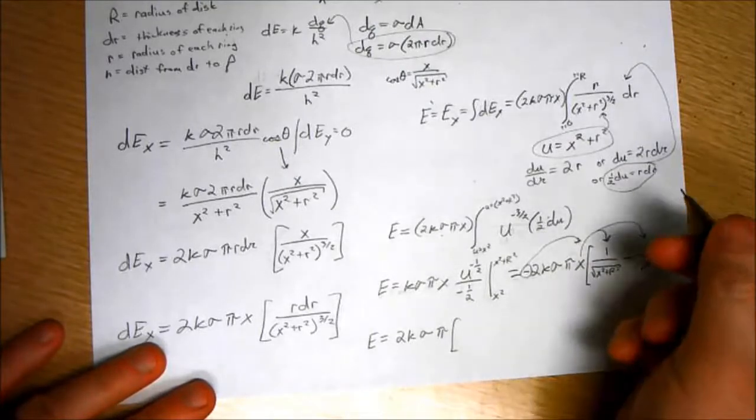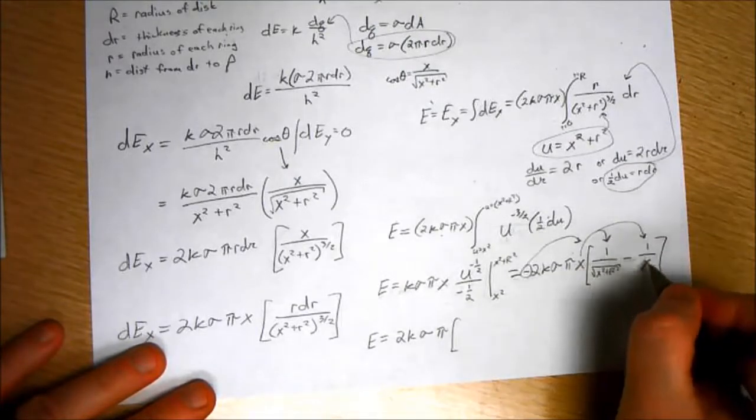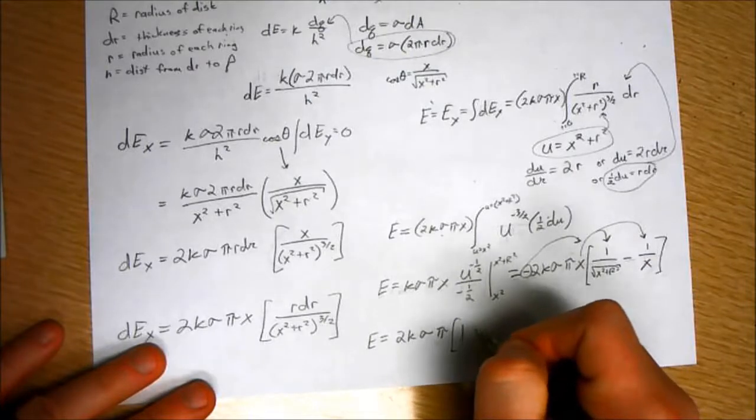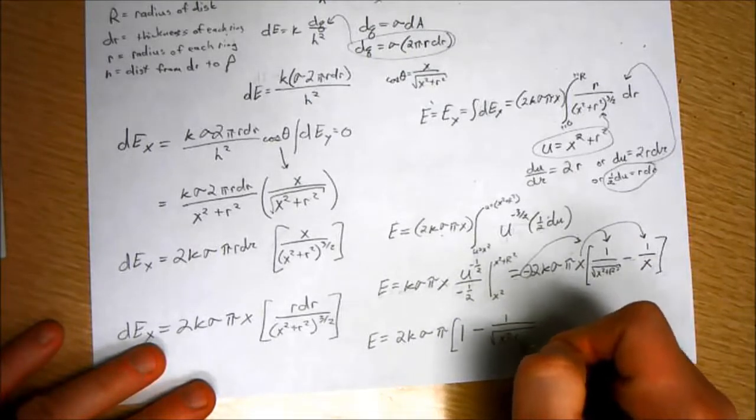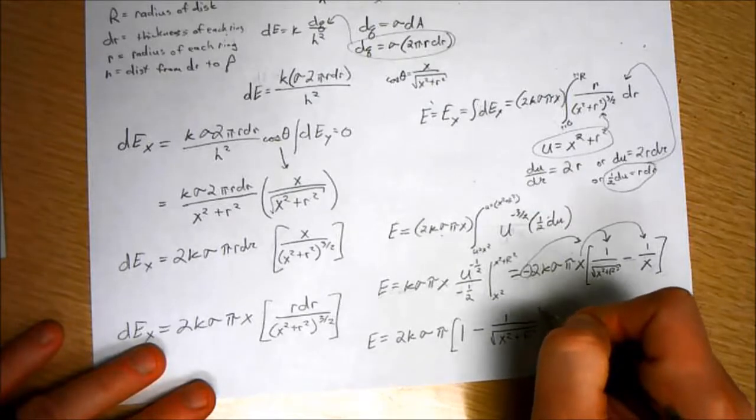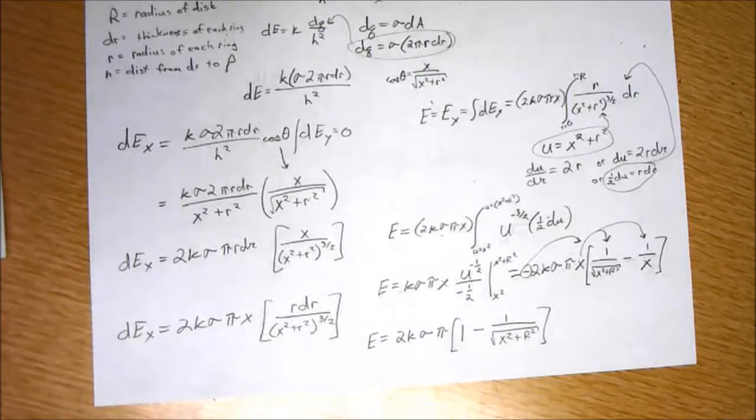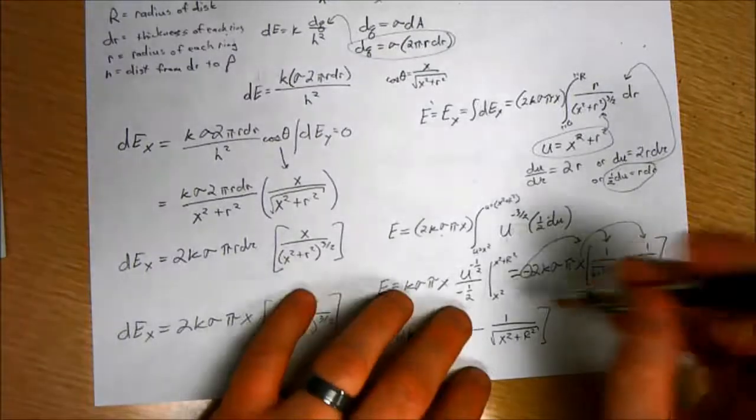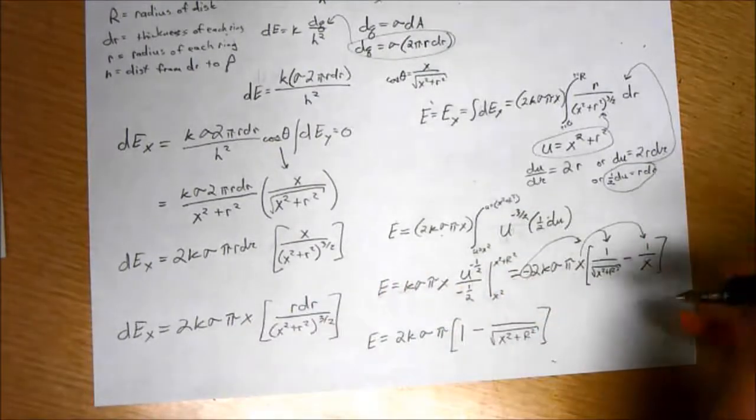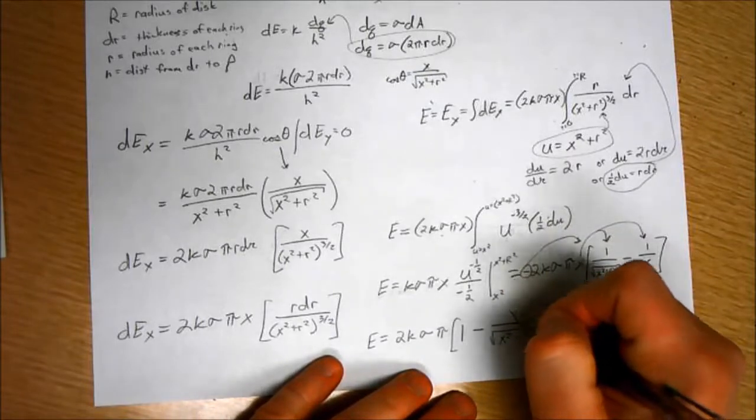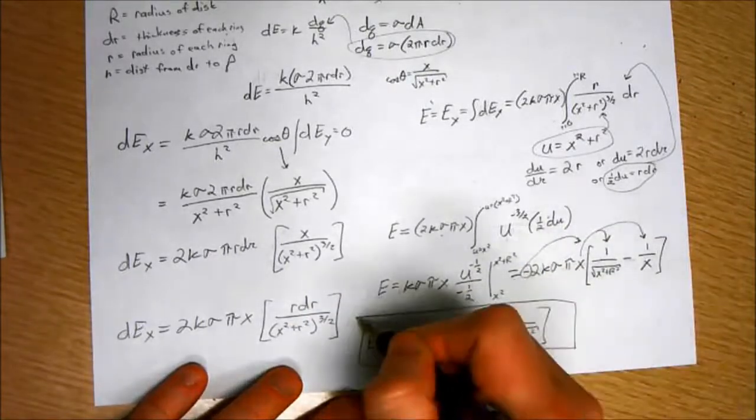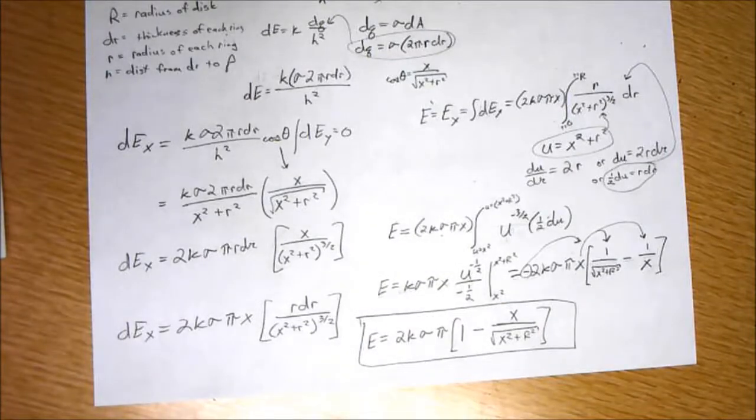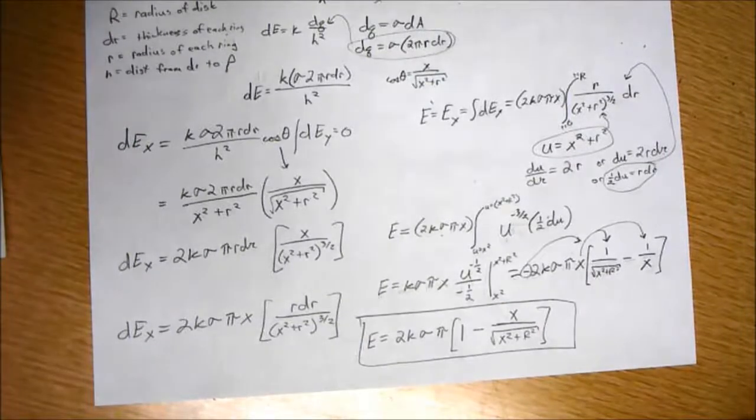So, E equals 2K sigma pi. Remember, this is flipped. And, this becomes X over X. So, that's 1 minus X over the square root of X squared plus R squared. Oh, I'm sorry. The X is distributed to here, too. So, this is the nice, neat, simple answer.